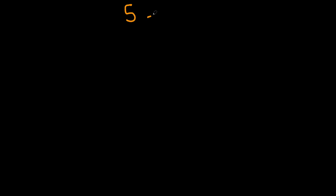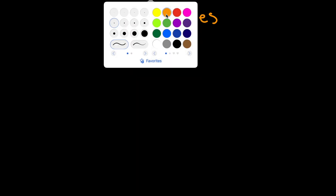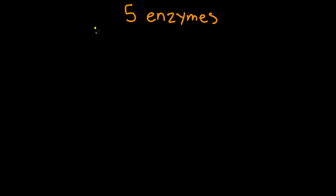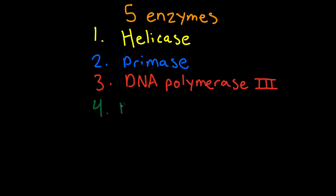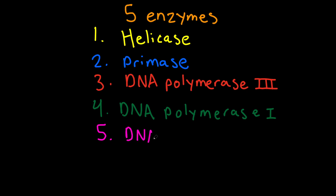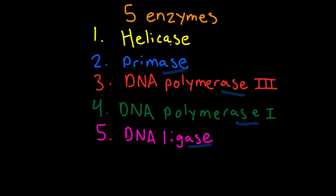In DNA replication, we have 5 enzymes responsible for this process. The first is DNA helicase, or just helicase. The second is primase. The third is DNA polymerase 3. The fourth is DNA polymerase 1. And the fifth is DNA ligase. Each of these enzymes carries the suffix '-ase', which usually indicates an enzyme.